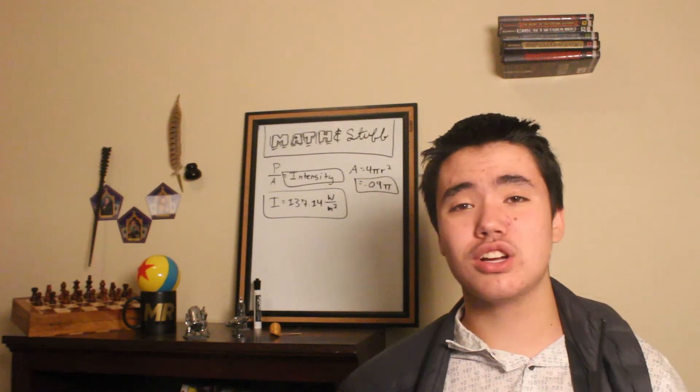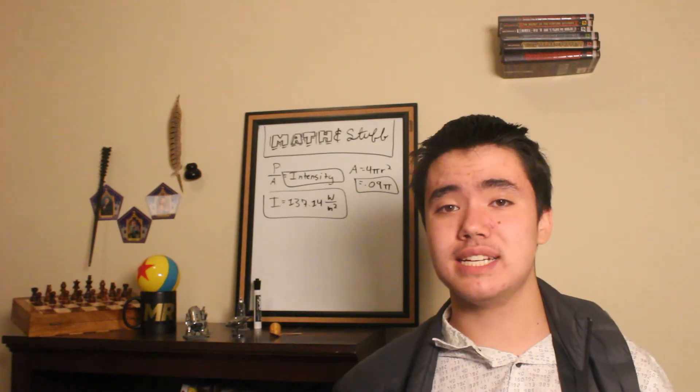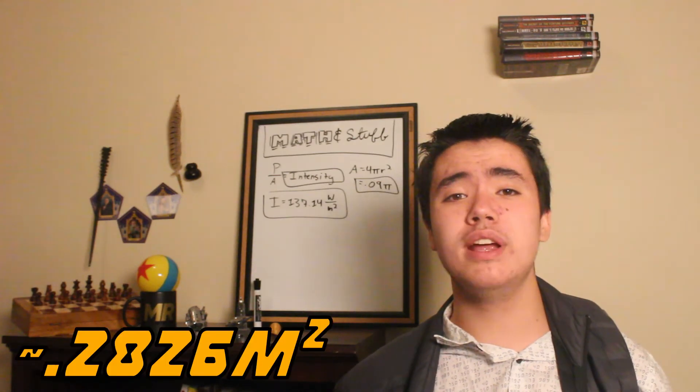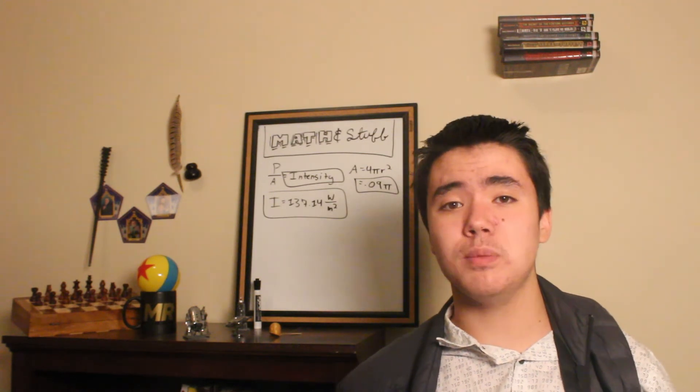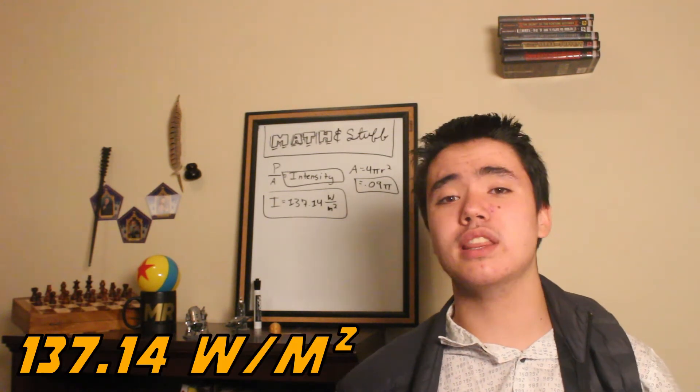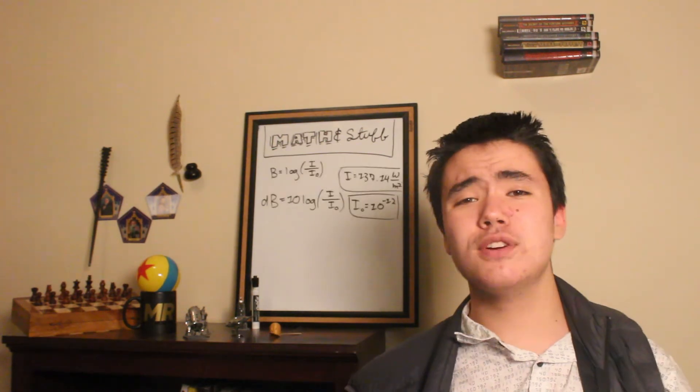And every time I tried to look at the surface area of a turkey, it just gave me the country. A sphere with a radius of 15 centimeters has a surface area of 0.09 pi square meters. And if we divide our power by that, then we get that we need to input 137.14 watts to every square meter of this turkey.